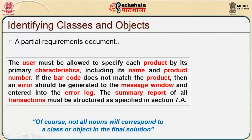Consider this sample requirement: the user must be allowed to specify each product by its primary characteristics including its name and product number. If the barcode does not match the product, an error should be generated to the message window and entered into the error log. The summary report of transactions must be structured as specified in a specific section. The nouns predominant in this paragraph are highlighted to identify objects.